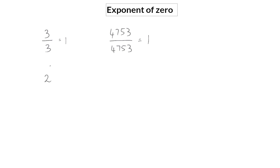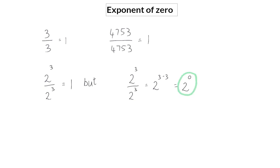Similarly, when we divide a value that has an exponent by itself, the answer will still be one. But if we take this same expression and simplify using the exponential law, we subtract the two exponents because we are dividing — that will be three minus three. This gives us two to the power of zero, meaning that anything to the power of zero will always have a value of one.